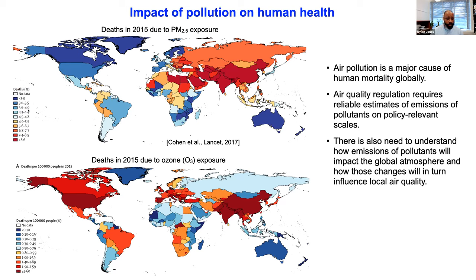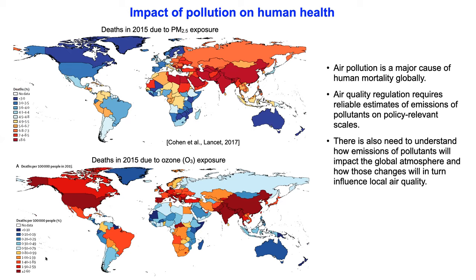This is showing the percentage of total deaths in each country in 2015 due to PM 2.5 exposure — on the order of three all the way up to more than nine percent of total deaths. They estimated about four million deaths globally associated with particulate exposure. For ozone the picture is less grim but equally unfortunate — Cohen et al. estimated that in 2015 there were about a quarter of a million deaths globally due to ozone exposure.